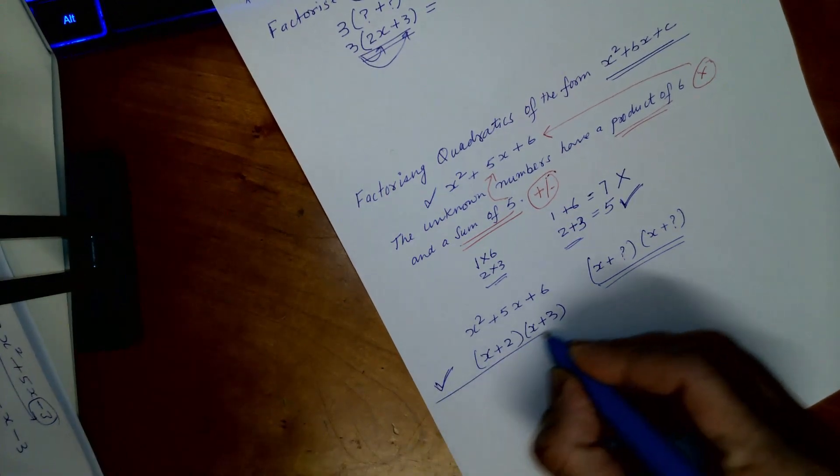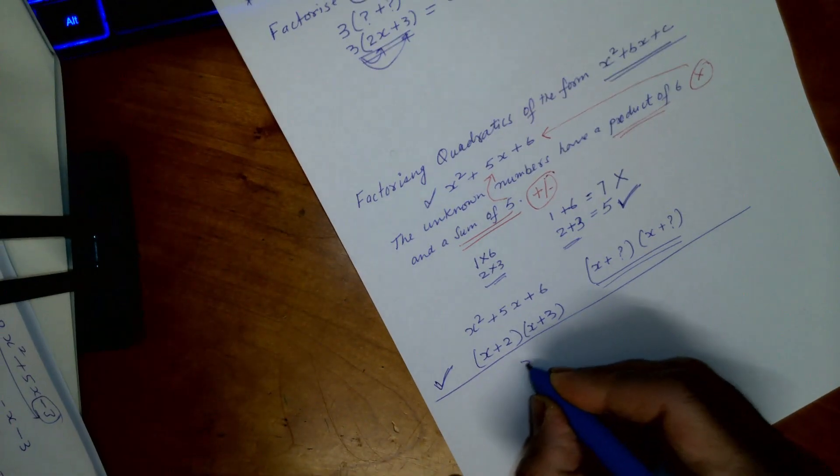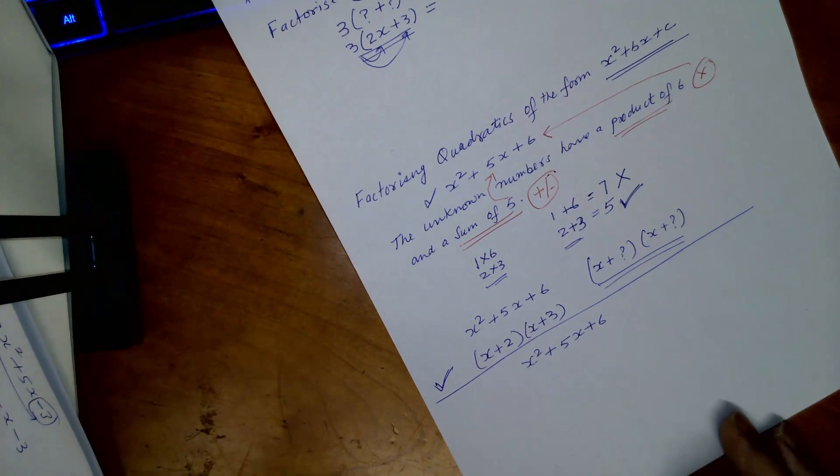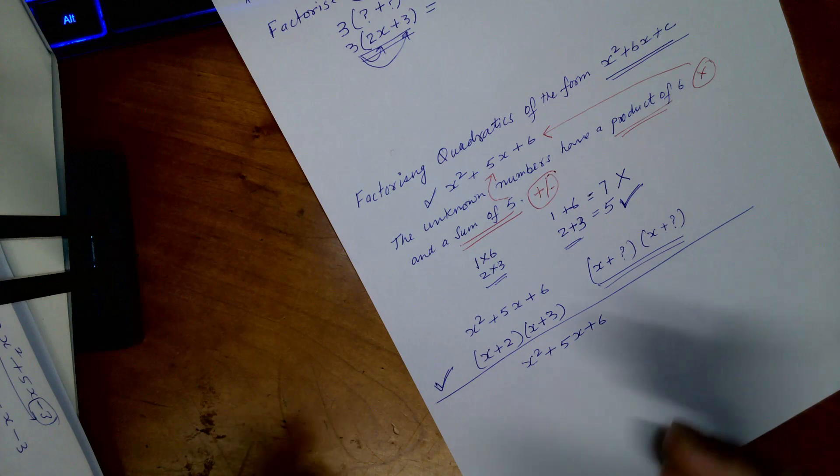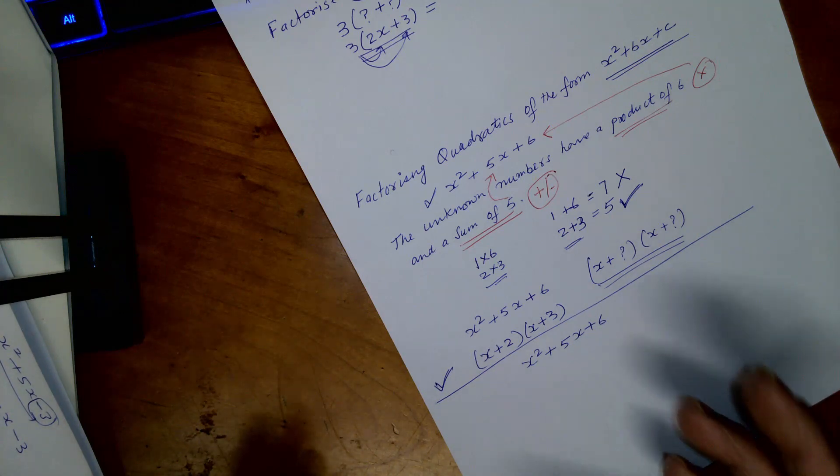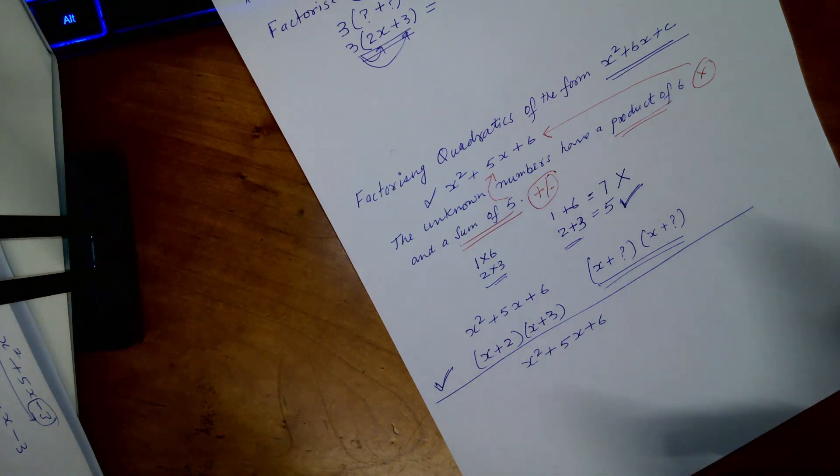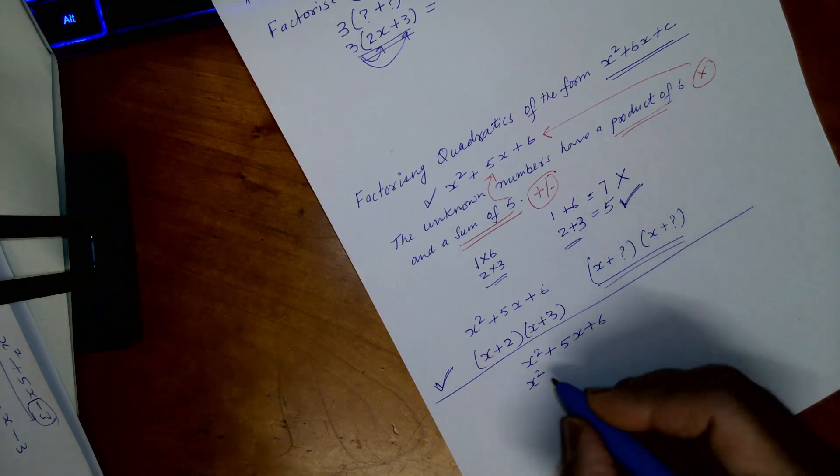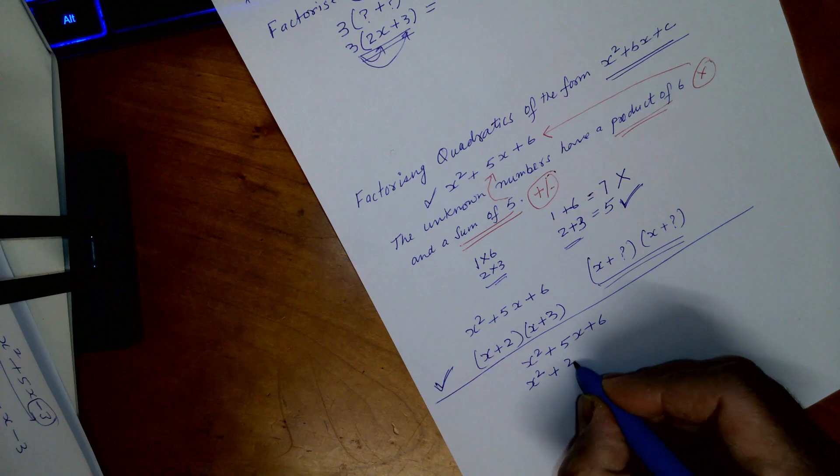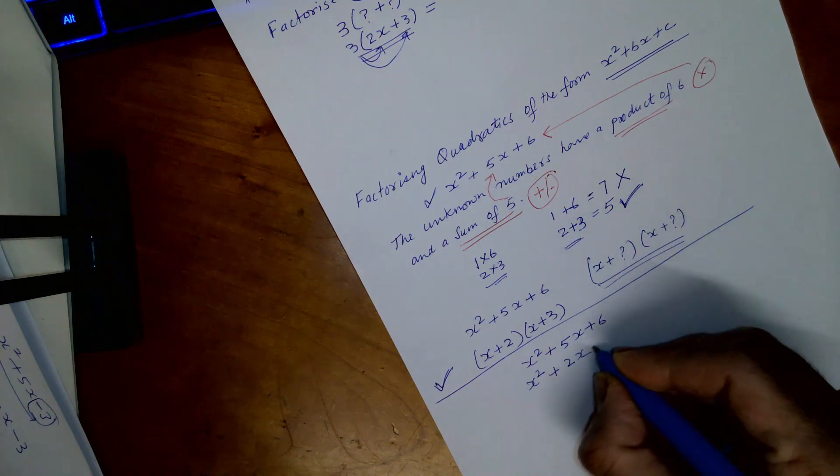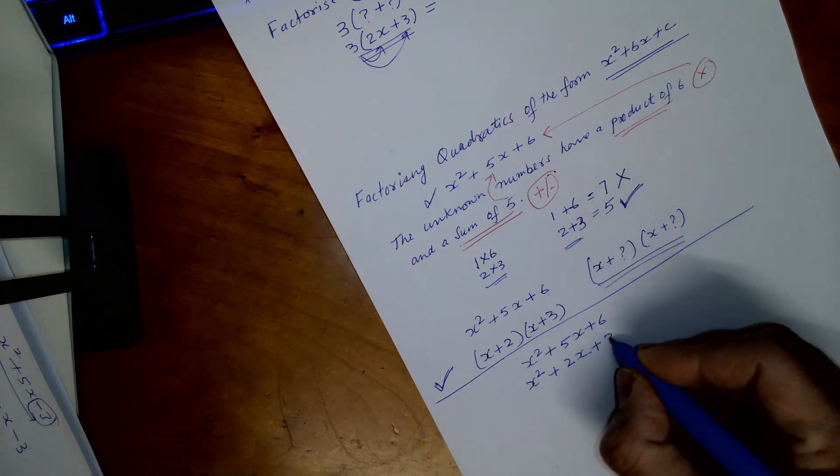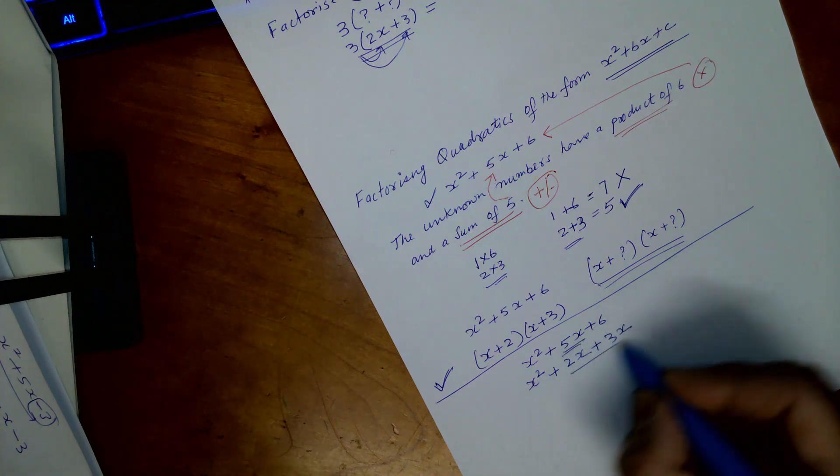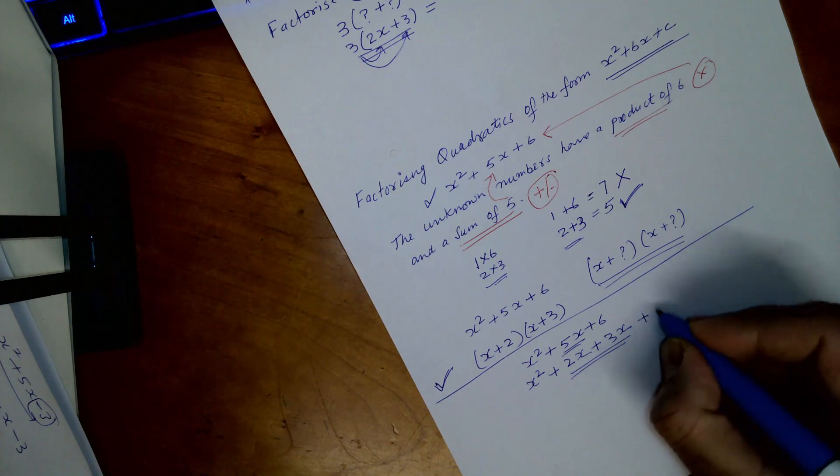In that method, if I write again, you say here x square 5x plus 6. This method you need to do when you do more complex factorization. So what we achieve here is x square plus 2x plus 3x plus 6.